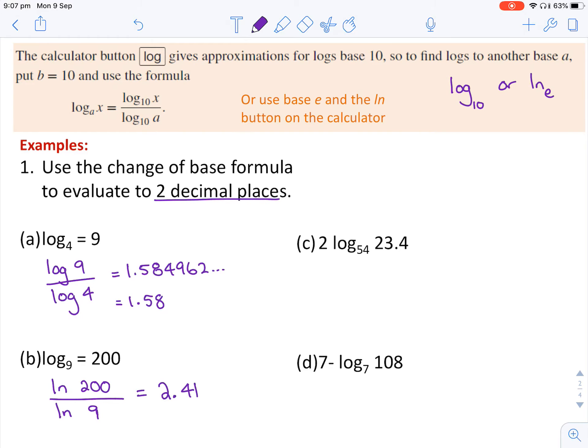Here, the first thing we want to do is consider that when we're using the change of base, it only applies to the log component. So any coefficient will just stay as a coefficient. So this is the same as two times log of 23.4, all over log of 54.